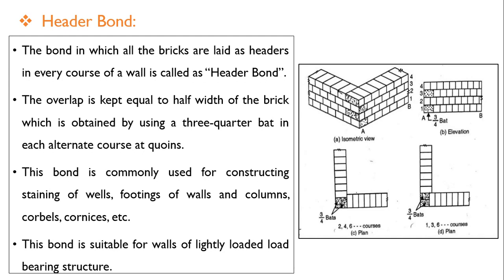The first is header bond. When bricks are laid with their length perpendicular to the face of the wall, it is called a header. The bond in which all the bricks are laid as headers in every course is called header bond. The overlap is kept equal to half the width of the brick, which is obtained by using a three-quarter bat in each alternate course at corners. This bond is commonly used for lining of wells, corbels, cornices, and columns.